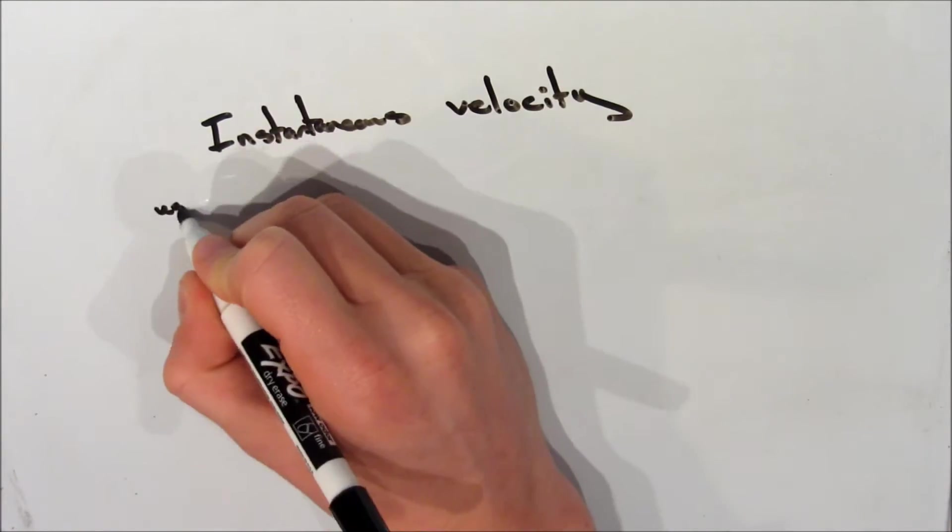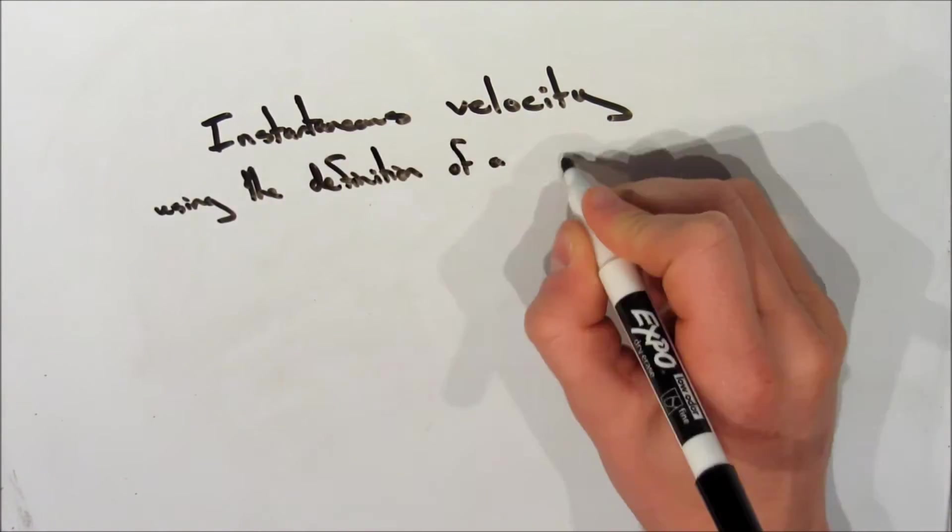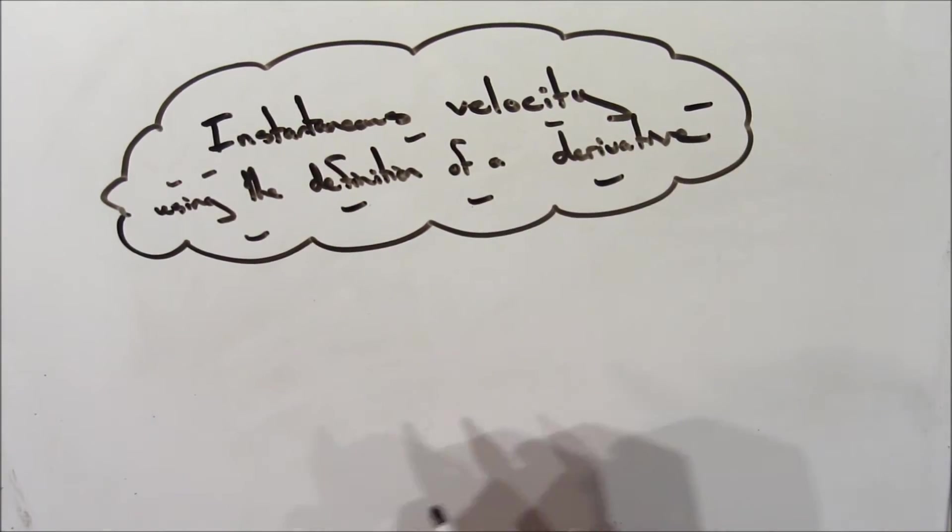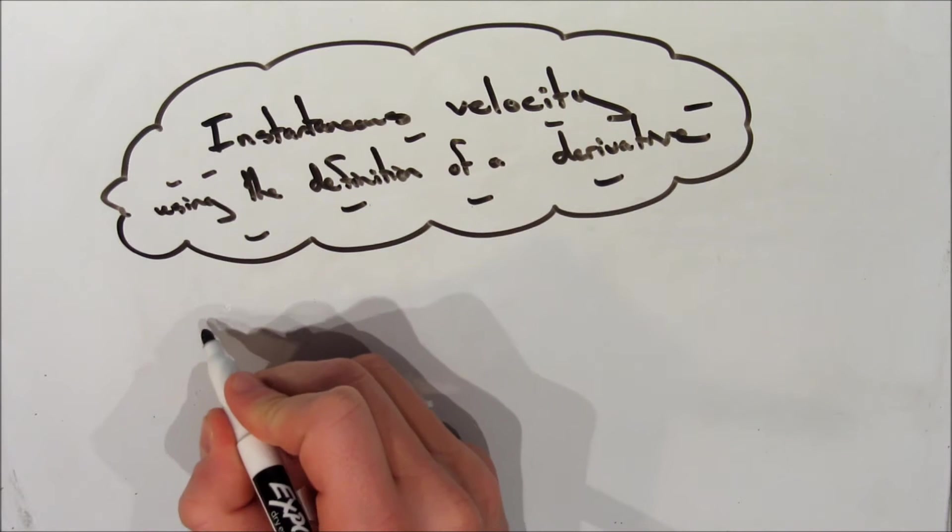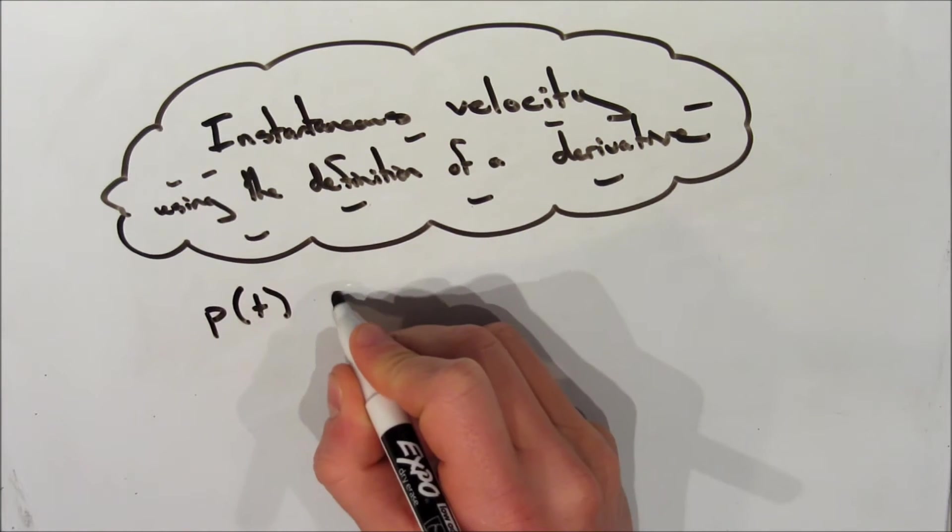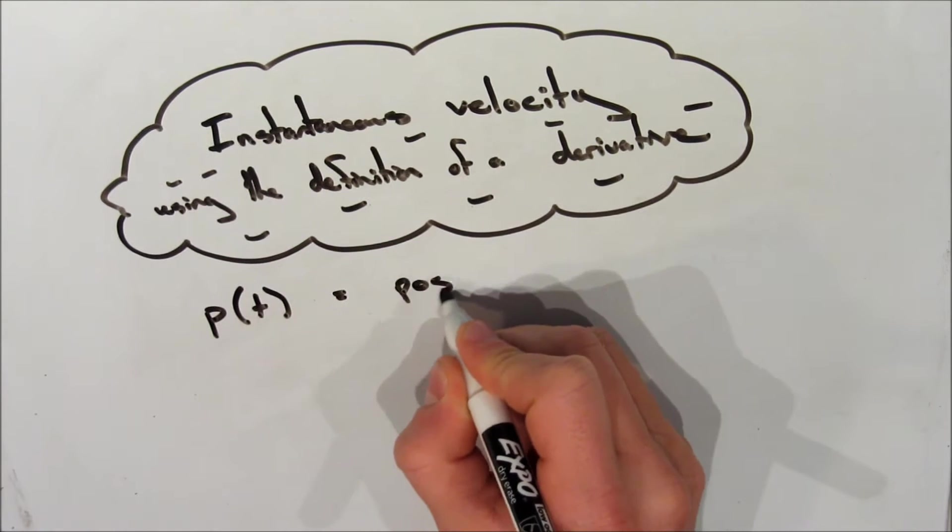Today I'm going to talk to you guys about calculating instantaneous velocity by using the definition of a derivative. Before we start, it's good to know that if we have a function, we'll call it p of t, and we'll use this to represent the position of an object.